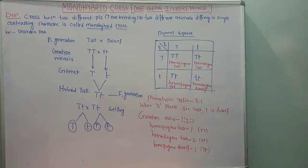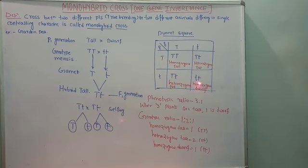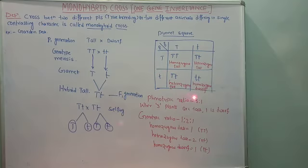By seeing this chart, we conclude: the phenotypic ratio is 3:1. Three plants are tall and 1 is dwarf. Phenotypic ratio means the external characters of the pea plants — 3 tall plants are observed and 1 dwarf plant is observed at the end of the F2 generation. The genotypic ratio will be 1:2:1, meaning 1 homozygous tall (TT) : 2 heterozygous tall (Tt) : 1 homozygous dwarf (tt).